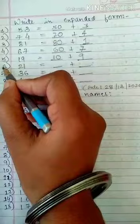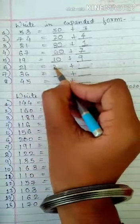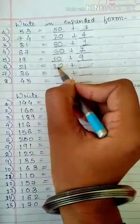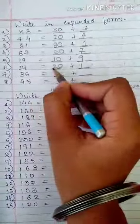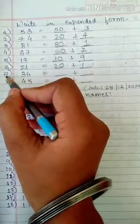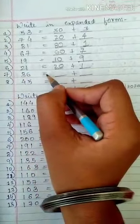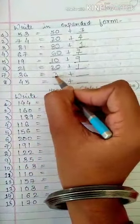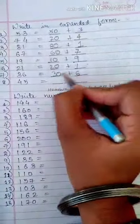Question number 6, 21 is equal to 20 plus 1. Question number 7, 36 is equal to 30 plus 6.